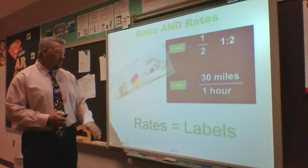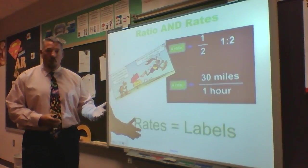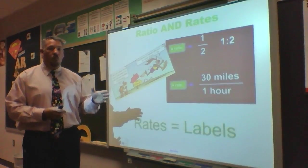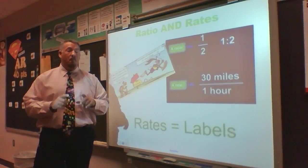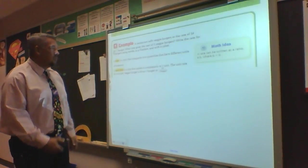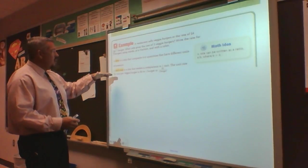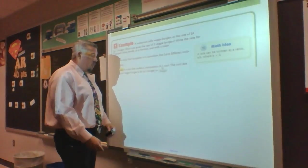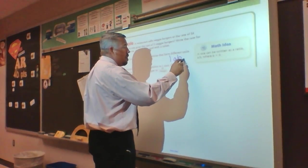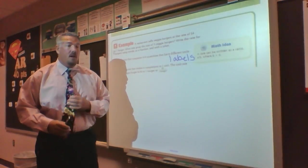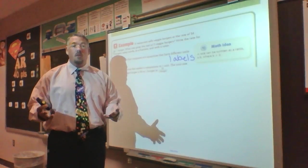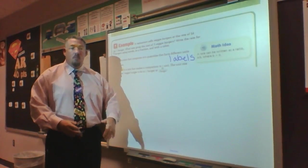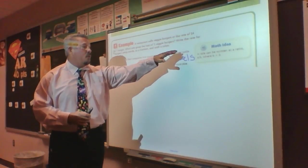But what about rates? The only difference with rates is that rates are going to have labels. Most of the time, the question will tell you how to set it up. We can set them up just like a ratio — using the word, the colon, or the fraction — but mathematically, the easiest way to write a rate is as a fraction. A rate compares two quantities that are different units, meaning they have different labels. We can't change gallons into miles, so when I figure out gas mileage, I put miles per gallon because they have different units.